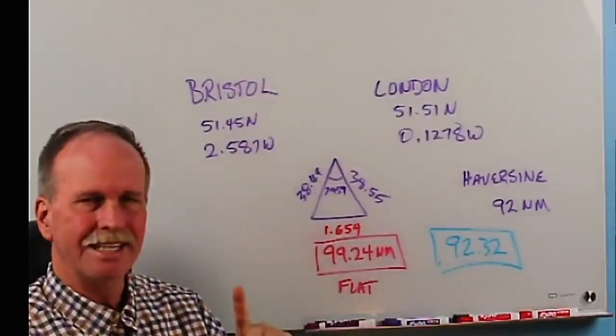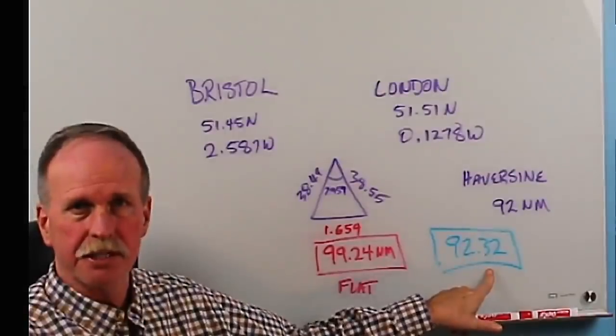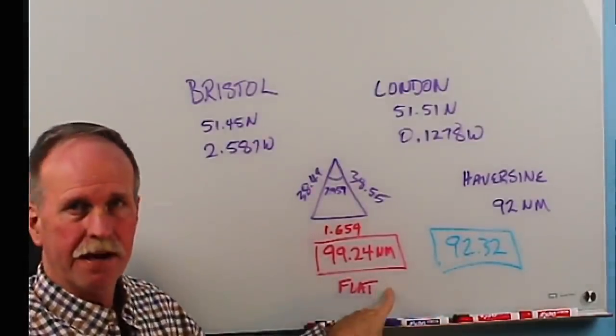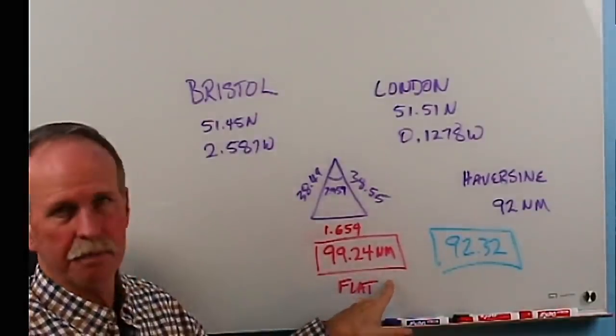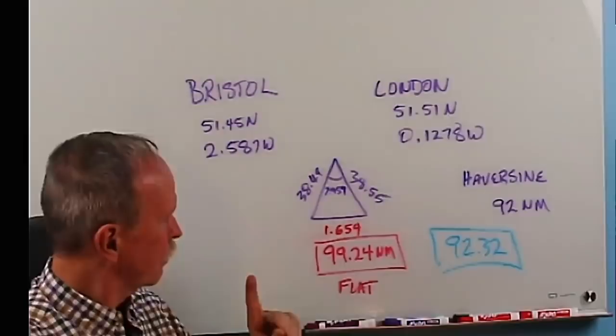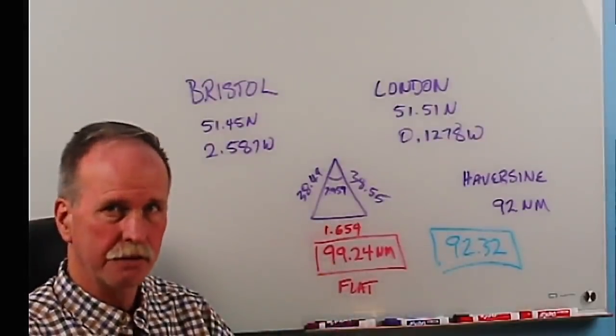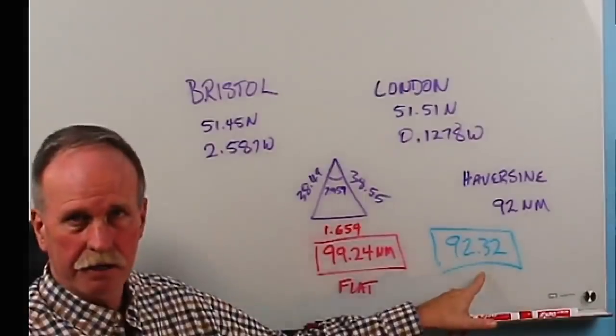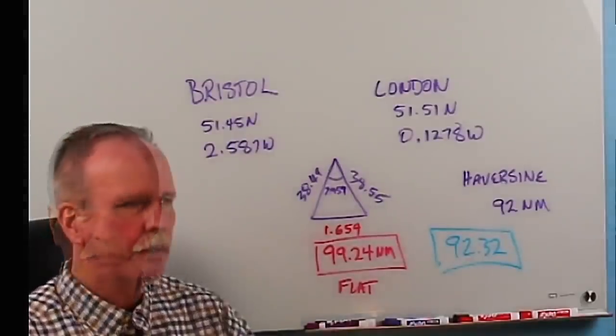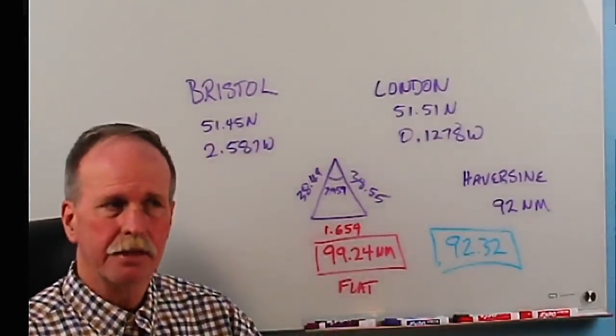That number assumes a perfectly spherical earth, whereas the actual earth is an oblate spheroid. That changes it very slightly. But it's good enough to tell that that better represents the shape of the earth than that does. In fact, it effectively rules out the possibility that the earth could be flat. Because if the earth was flat, it would be just over 99 miles to Bristol from London, where in reality, on a curved surface of a spherical earth, it's only 92. So in a perfect world, the math would work out perfectly.